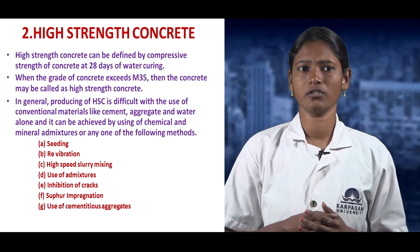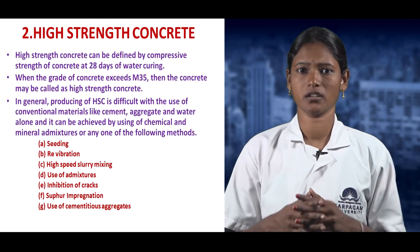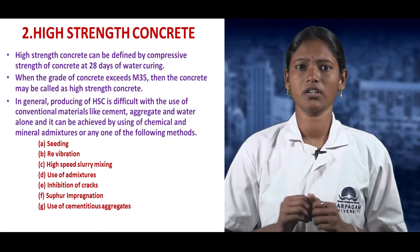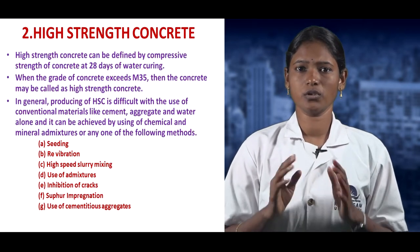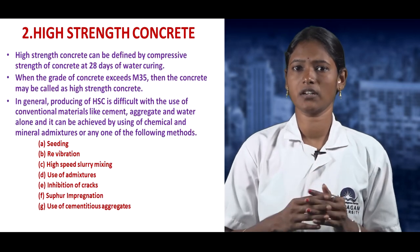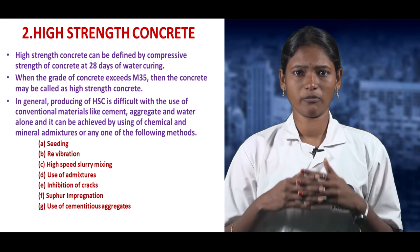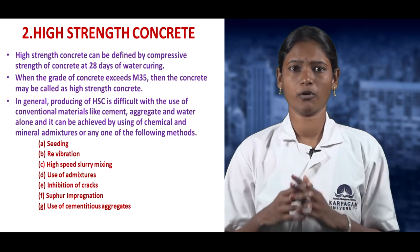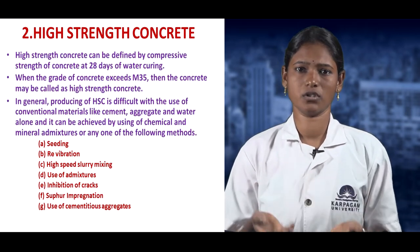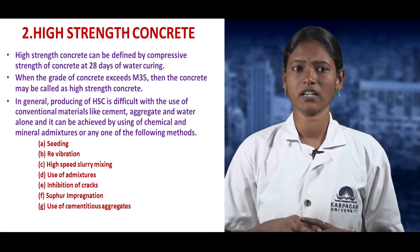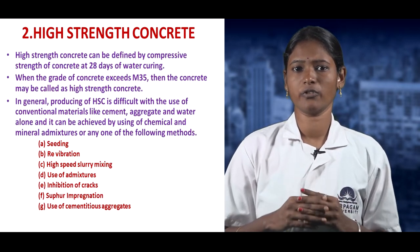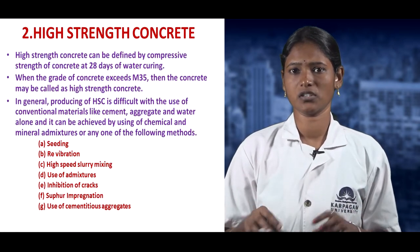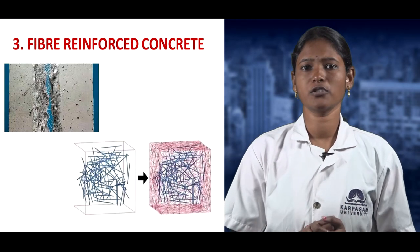In high strength concrete, the strength is improved beyond a 28-day curing period when the concrete exceeds M35 grade. The strength is improved by adding chemical and mineral admixtures. The methods for adding admixtures include: seeding, revibration, high-speed slurry mixing, use of admixtures, inhibition of cracks, sulfur impregnation, and usage of cement aggregate.